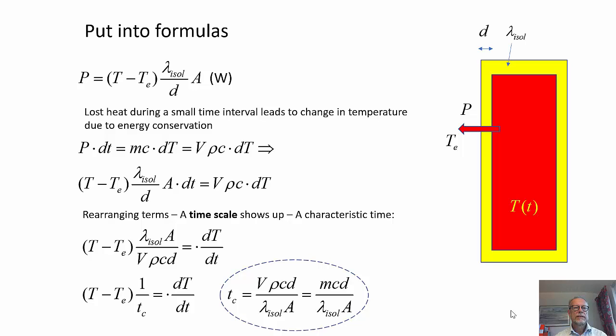P here symbolizes the heat loss from the body. It is determined by the temperature difference, the lambda value, the thickness of insulation and the exposed area.